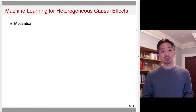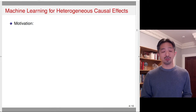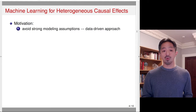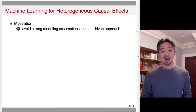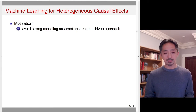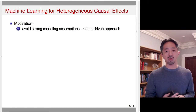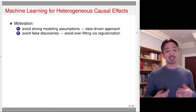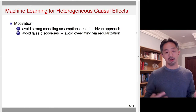Let's now shift gear and discuss the use of machine learning for estimating heterogeneous causal effects. Why do we use machine learning for estimation of heterogeneous treatment effects? There are a couple of motivations. First, we want to avoid strong modeling assumptions — modern machine learning methods allow you to estimate variables in very flexible functional forms, taking a data-driven approach. Instead of having a particular hypothesis, you try to use the data-driven approach to discover who is likely to be affected by the treatment most, either positively or negatively. At the same time, many machine learning methods allow you to avoid overfitting using some form of regularization.